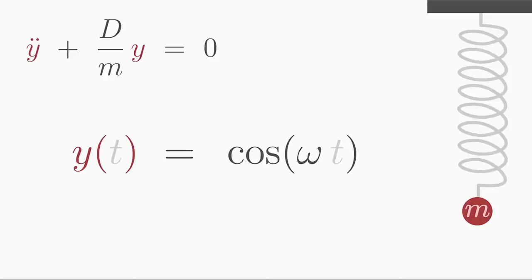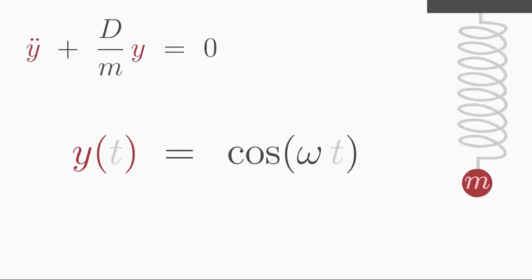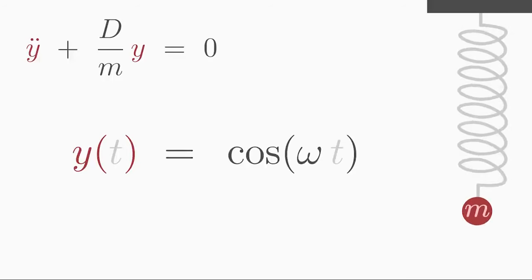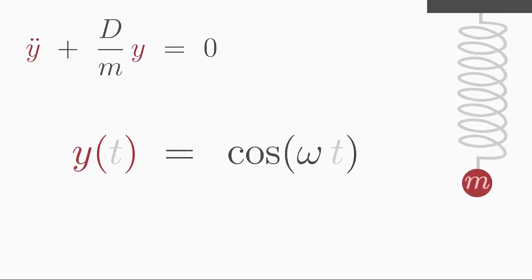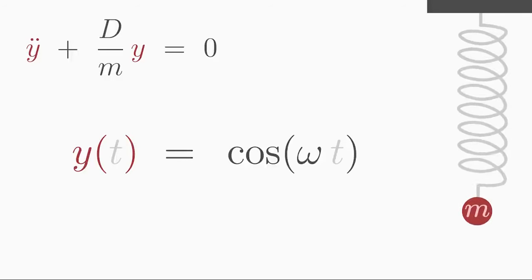As you can see, the displacement y changes periodically with time. The mass attached to the spring oscillates back and forth, and the oscillation is described by the cosine function.